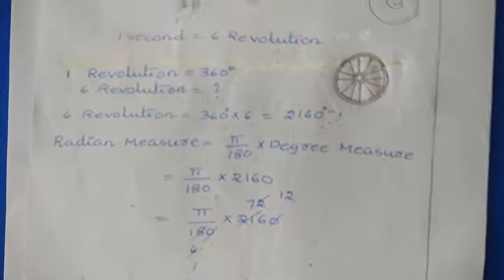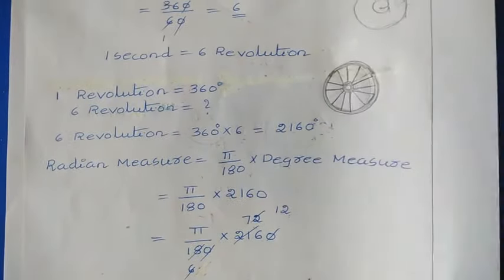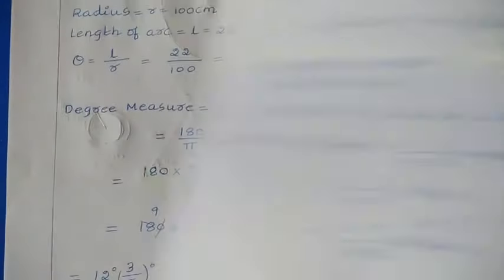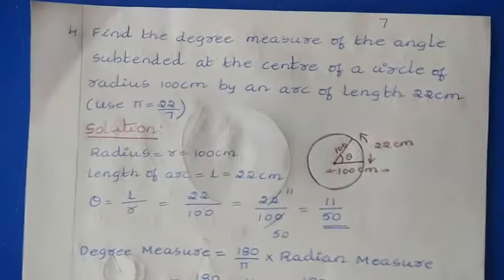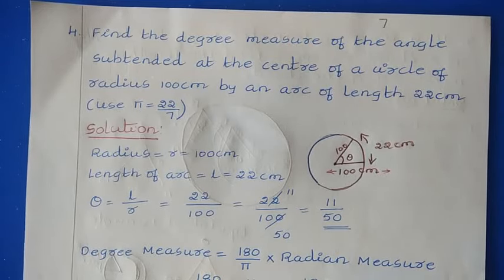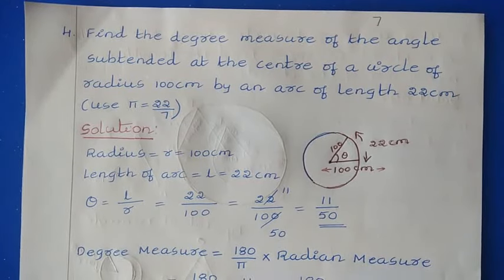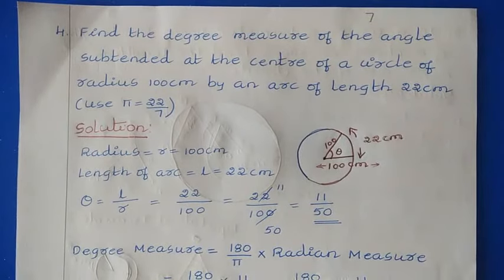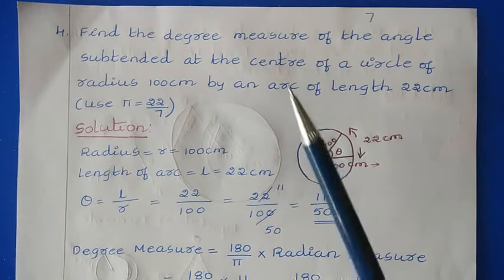That is about question number 3. Next, we will discuss question number 4: find the degree measure of the angle subtended at the center of a circle of radius 100 cm by an arc of length 22 cm. Use π = 22/7.